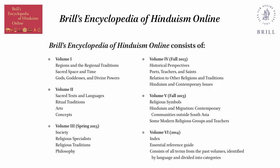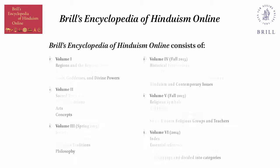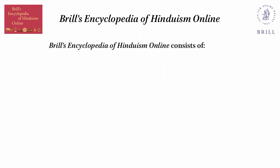The encyclopedia is organized into five thematic volumes, as opposed to from A to Z, and an index volume. Some content may still be forthcoming — check with your Brill contact for more information.